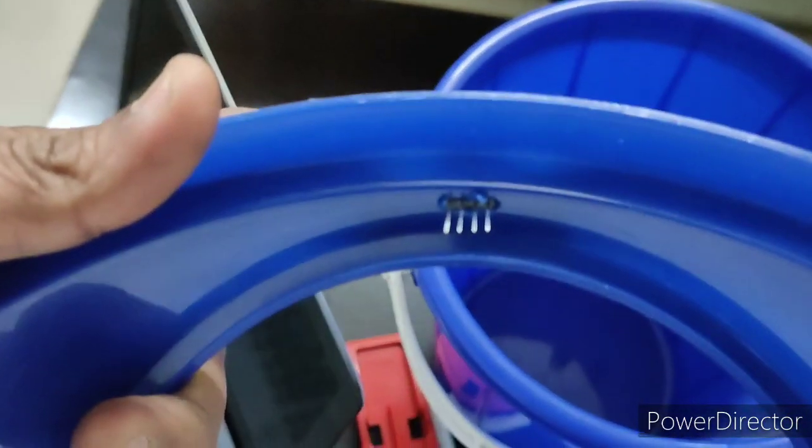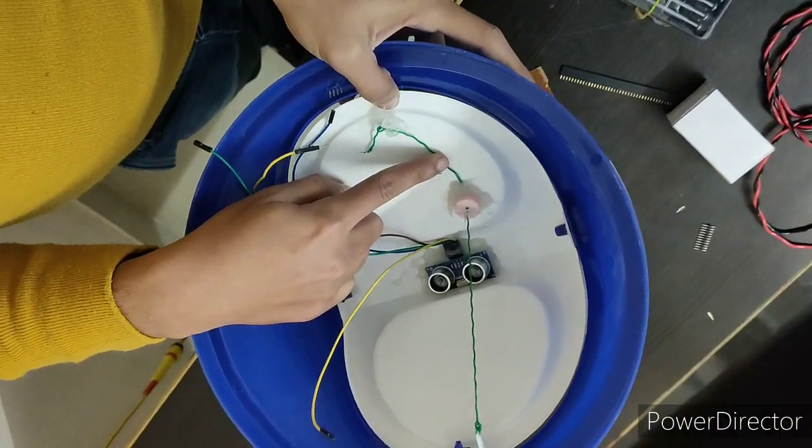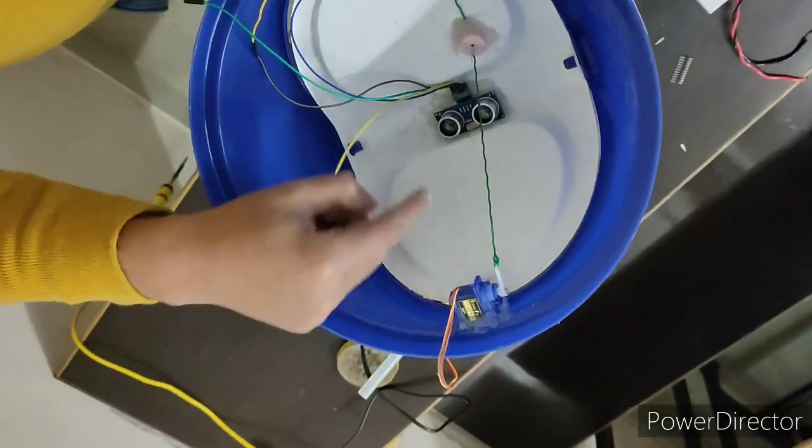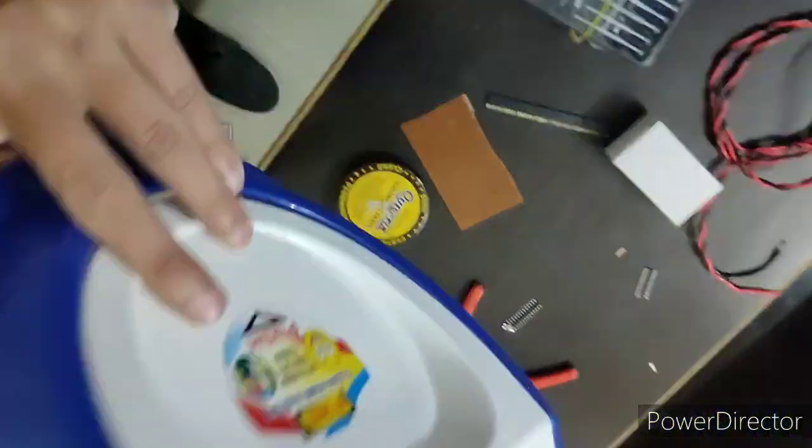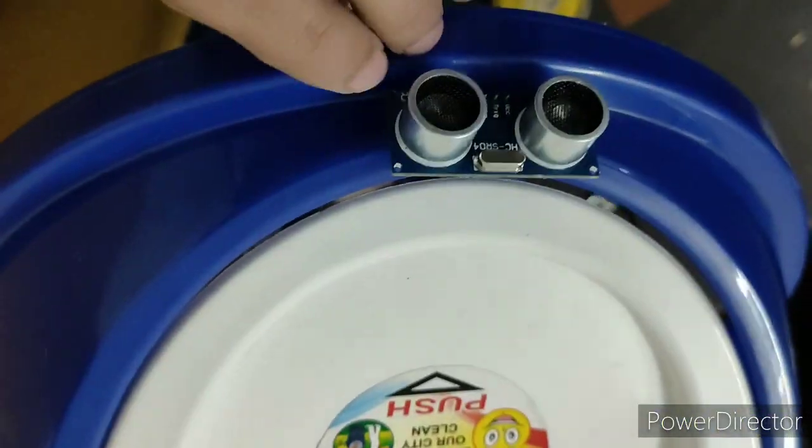Now we will be connecting one thread from the motor shaft to another end of the flap. We have used one nylon thread. You can use any thread which is available to you, but make sure the thread is connected tightly from the motor shaft to flap.